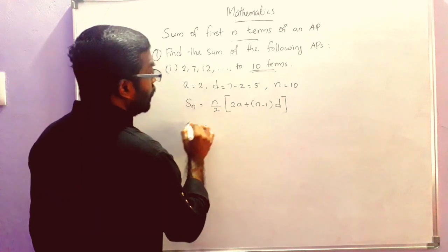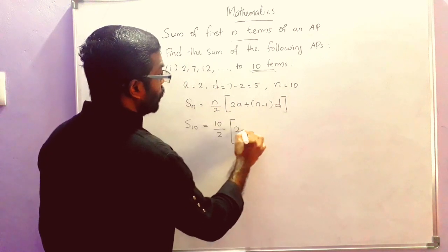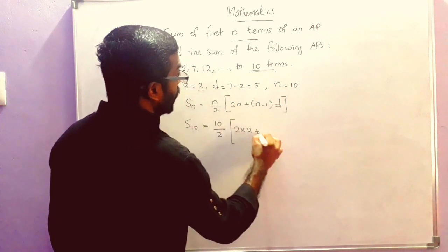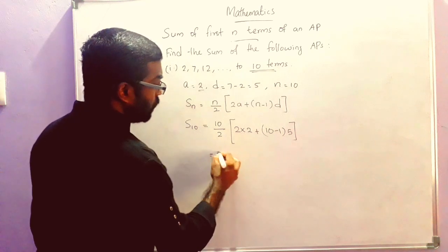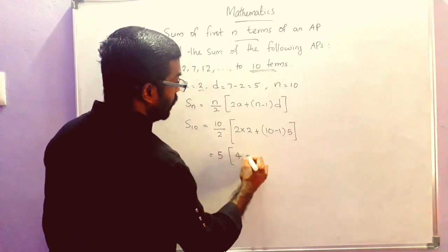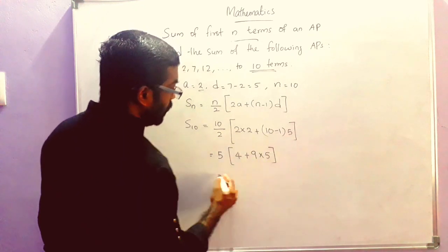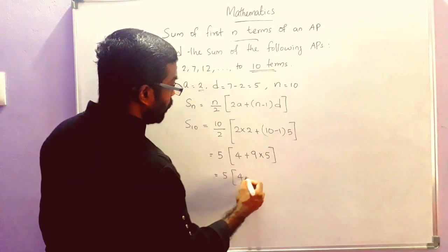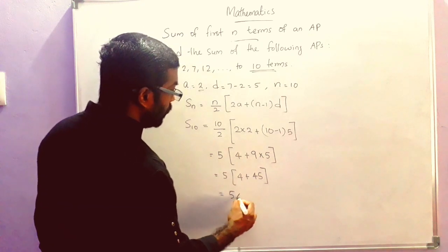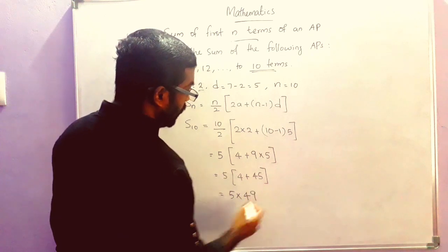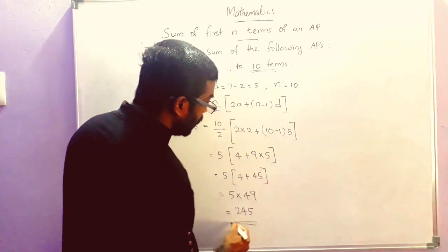Now we can replace the values. S10 is equal to 10 by 2 into 2 into 2, then plus 10 minus 1 into 5. 10 by 2 is 5. So 5 into 4 plus 9 into 5, which is 5 into 4 plus 45. That is 5 into 49, which equals 245. So the answer is 245.